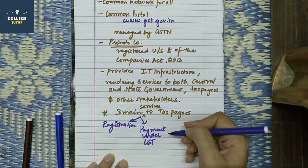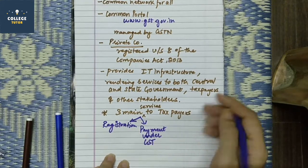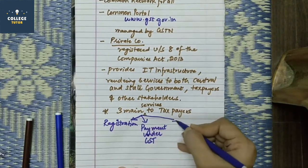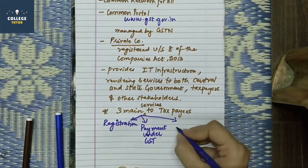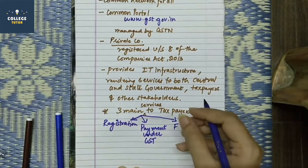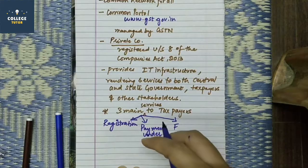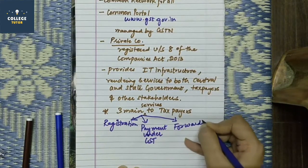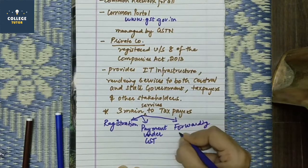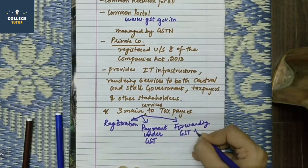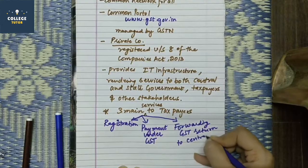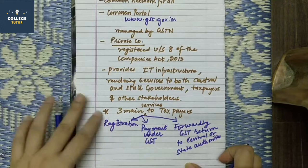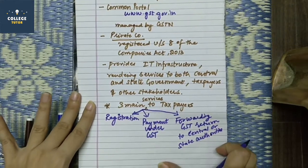The second main service is payment under GST — if you want to make tax payments under GST, GSTN provides that facility. The third main service they provide is filing GST returns to central and state authorities. These are the three main services provided to taxpayers.